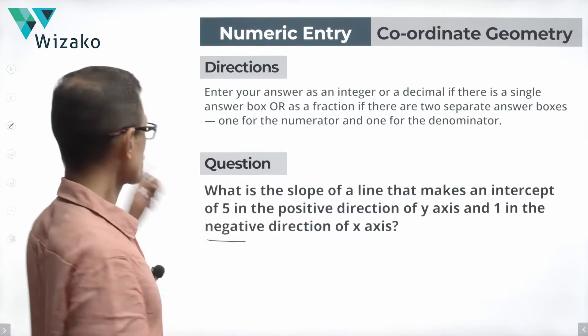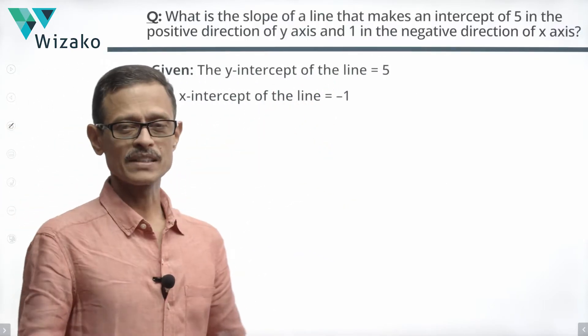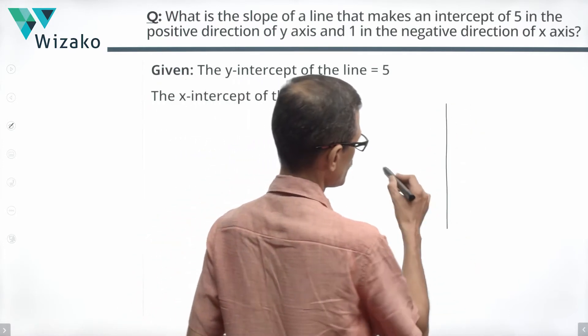So the y-intercept is plus 5 and the x-intercept is equal to minus 1. So what information do we have about this line?